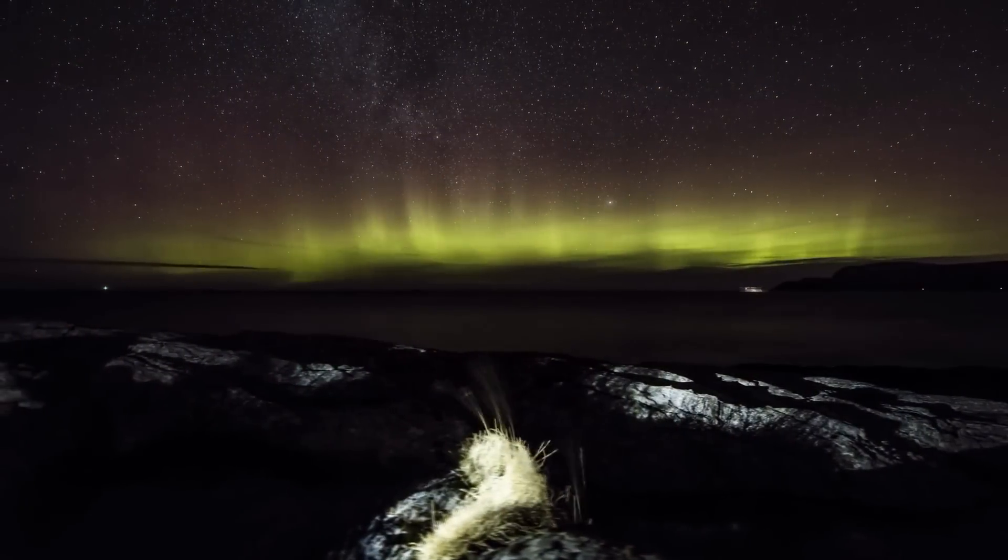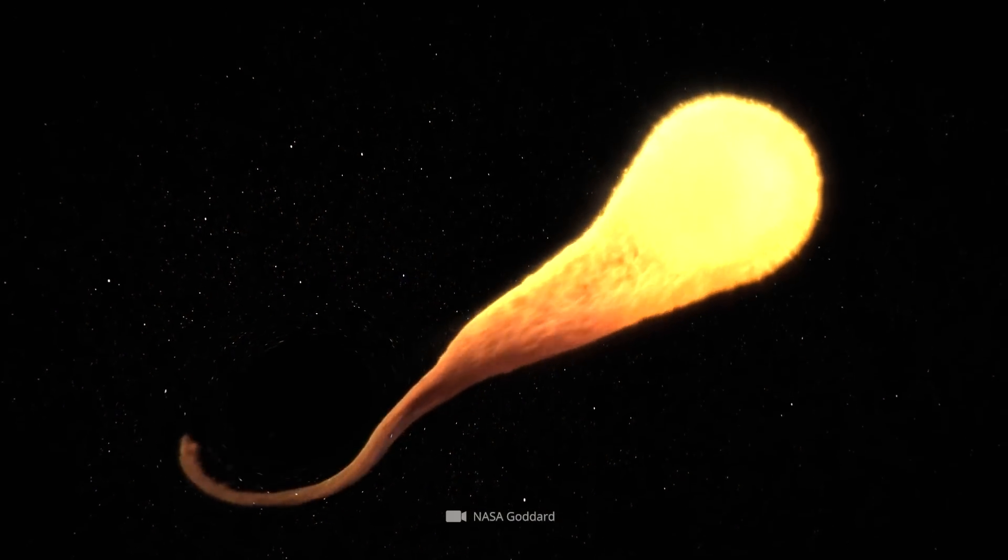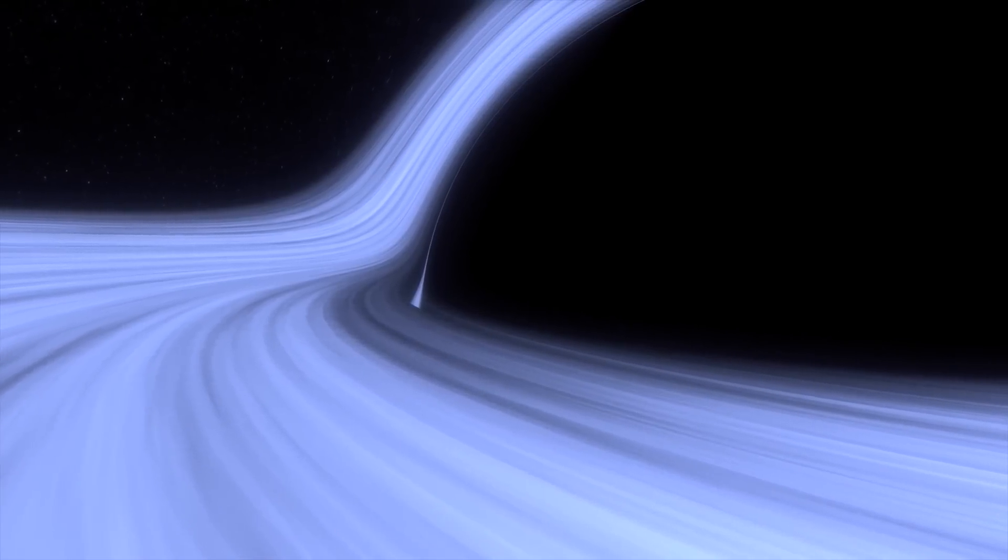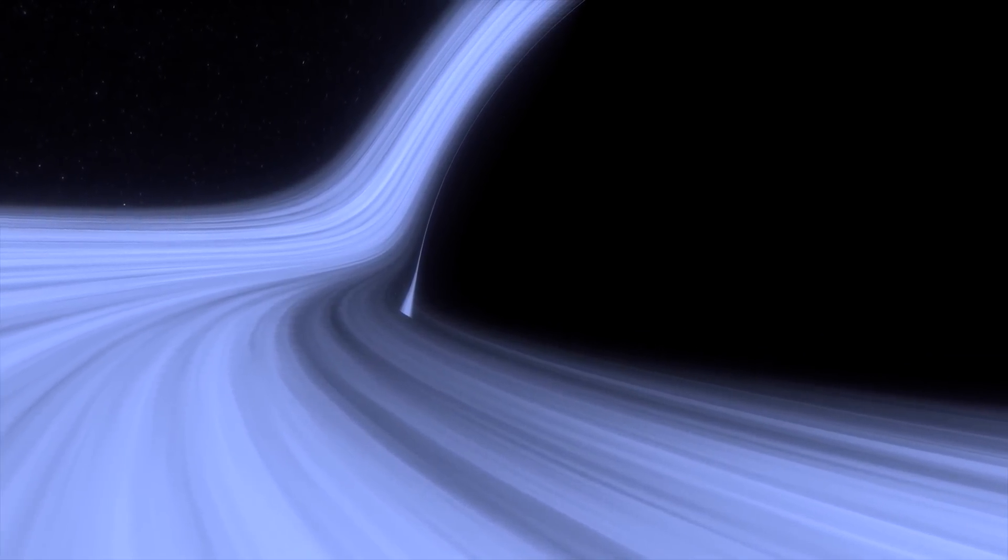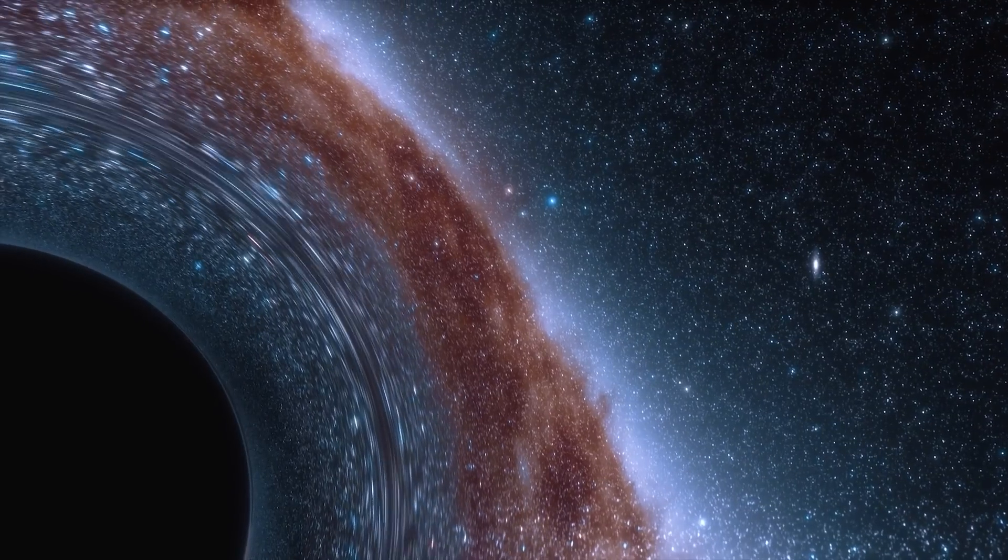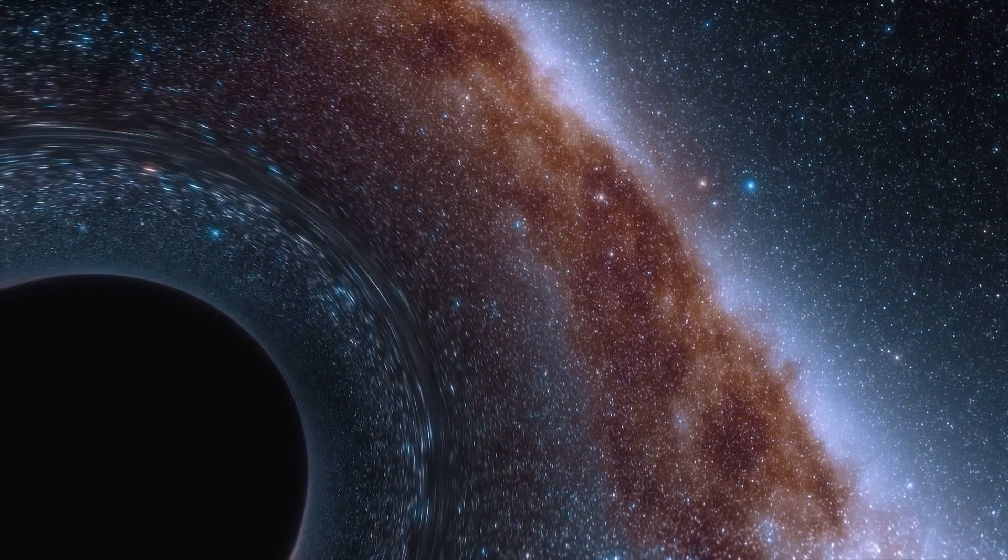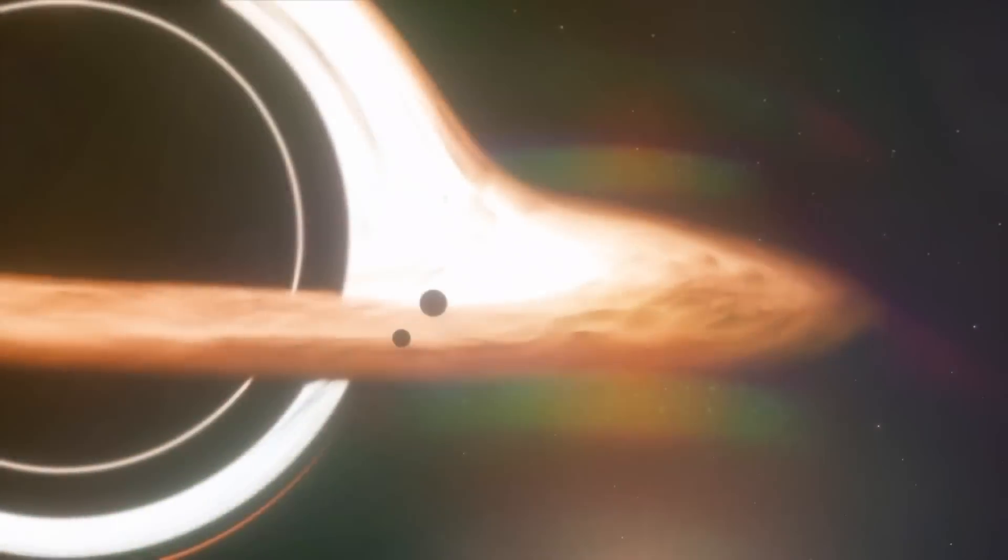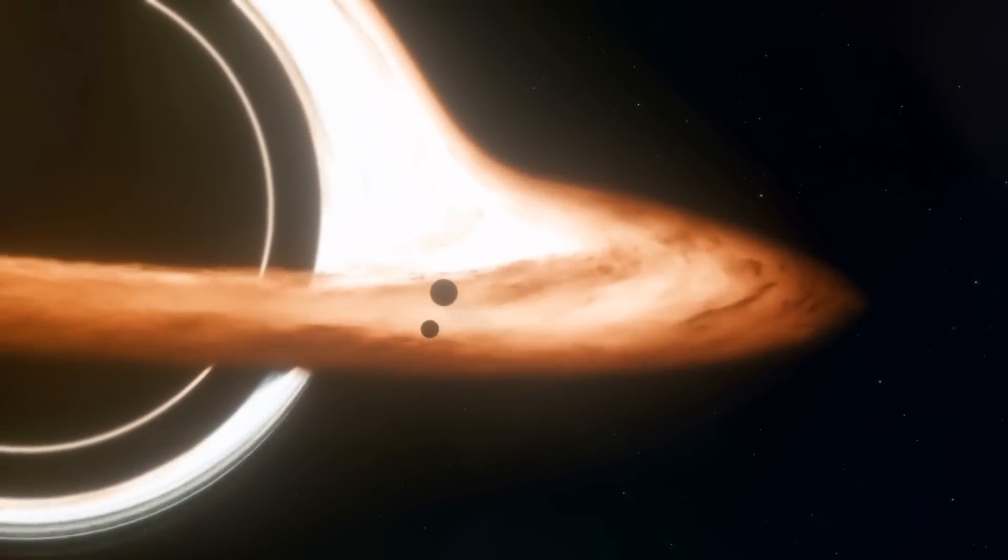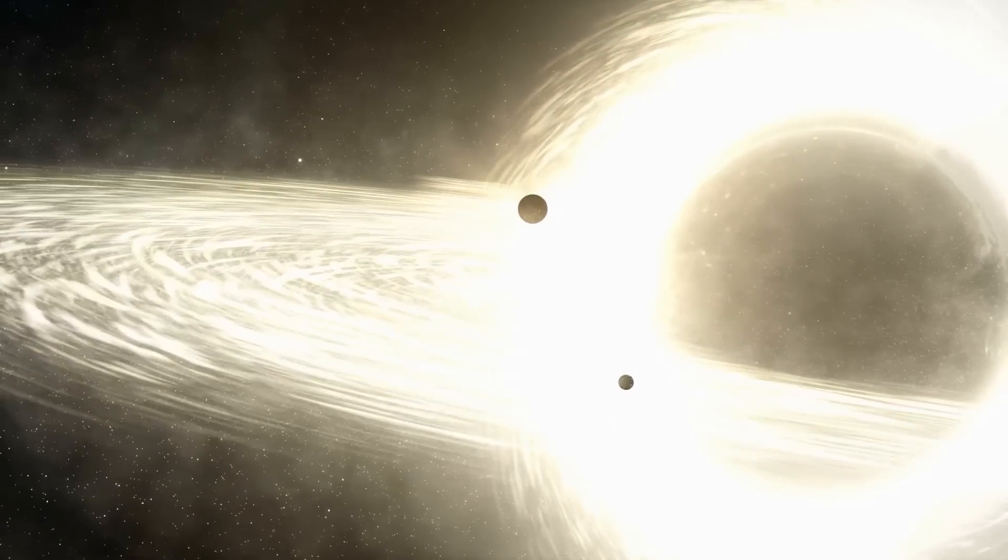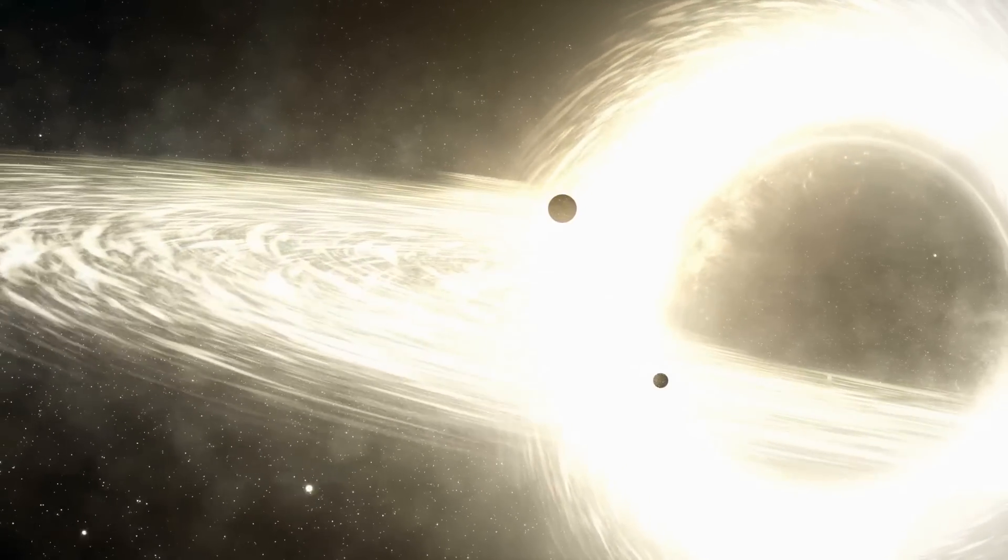Contrary to a widespread assumption, black holes are by no means cosmic vacuum cleaners. It's true that the mass monsters consume entire planets, stars, and huge cloud formations. But for this to happen, the objects must come dangerously close to the black hole's event horizon. Outside this ominous zone, the gravity monster behaves like any other mass body, which is why other celestial bodies can easily orbit it on stable paths.